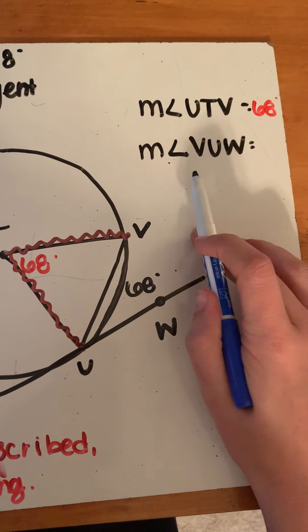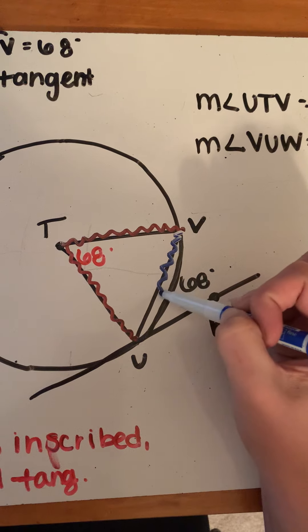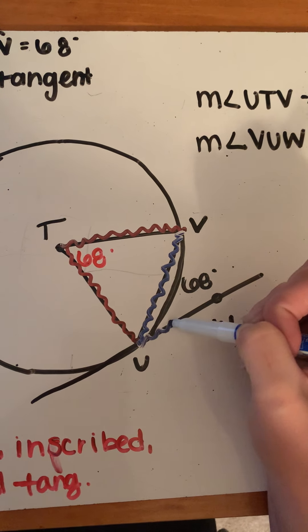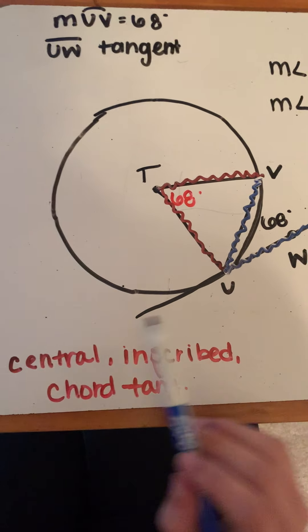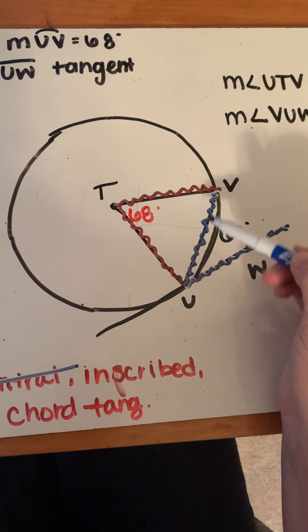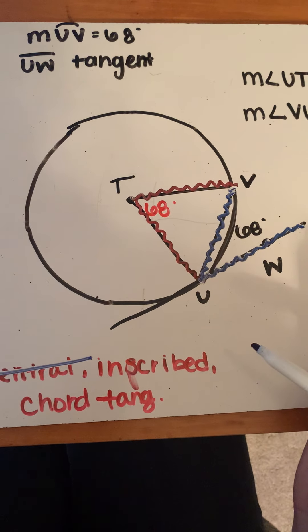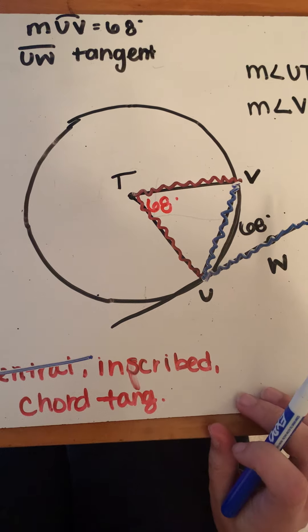Next we have angle VUW. Looking at this one, I'm going to figure out which classification it is. I can automatically rule out a central angle, because none of those points are at the center of our circle. So we either have an inscribed angle or a chord-tangent angle.